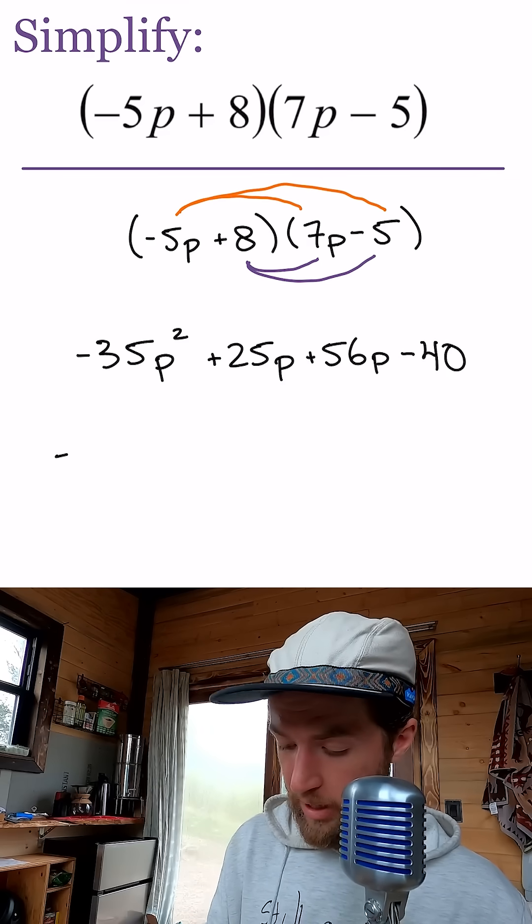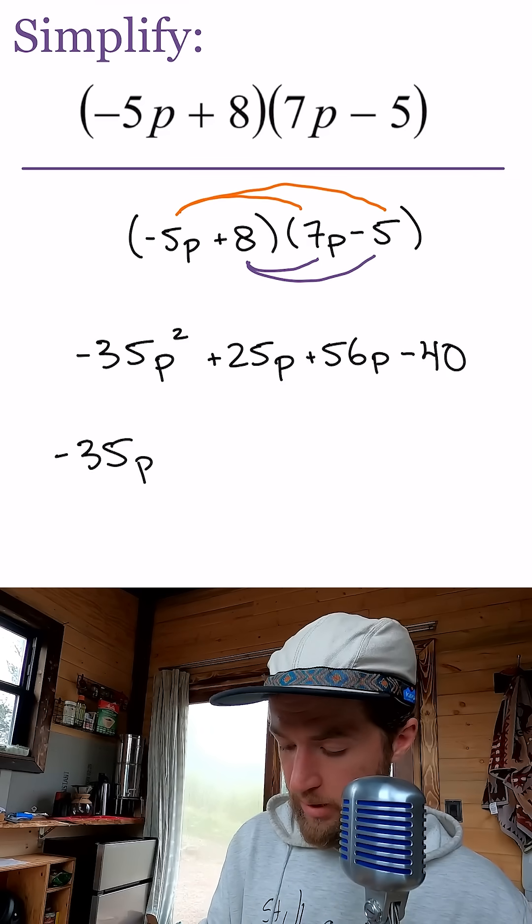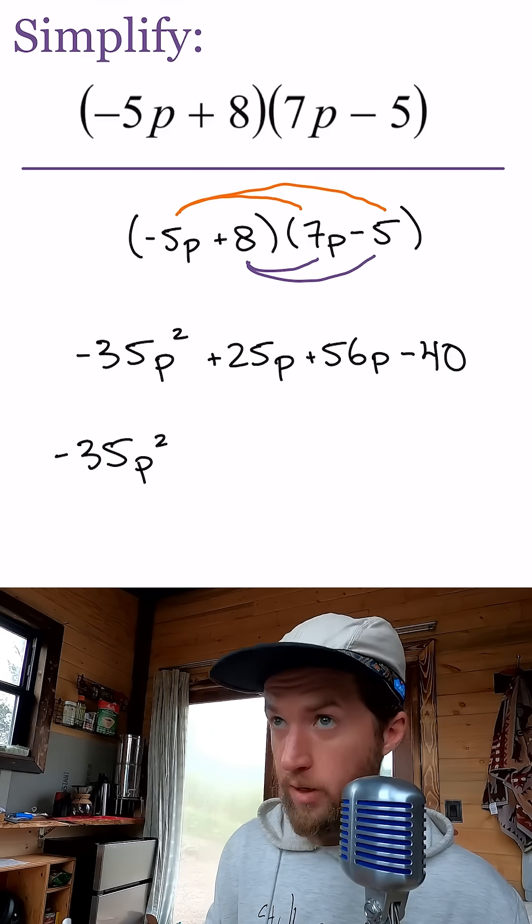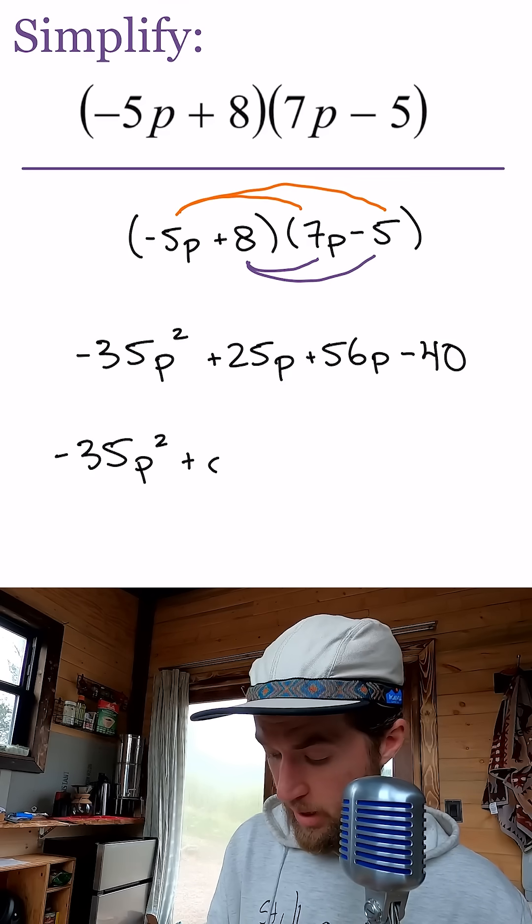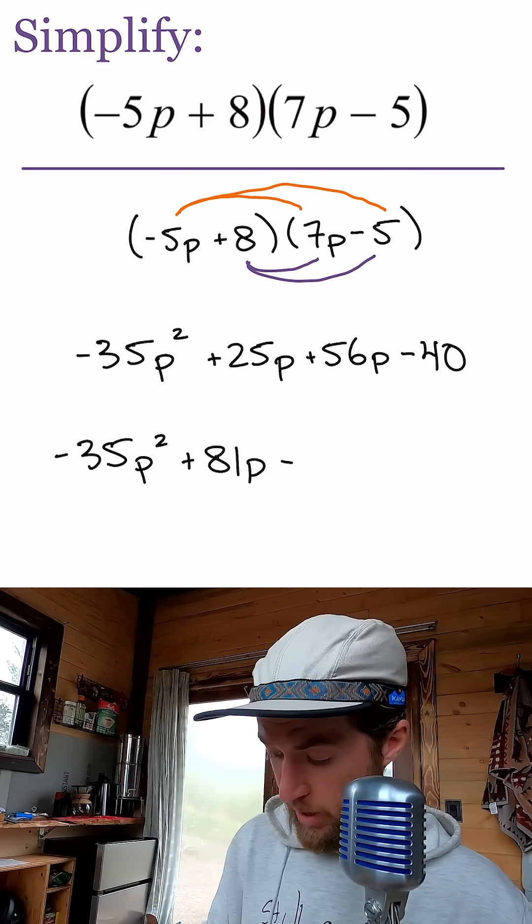So we'll do some simplification. Negative 35p squared plus 25, or 25 plus 56 is 81. 81p and then minus 40.